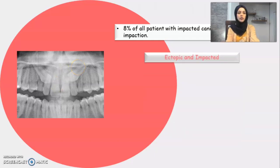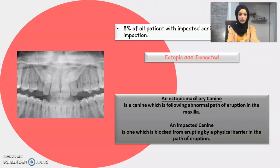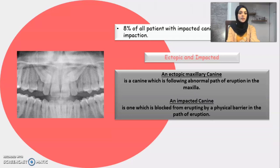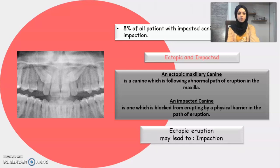An ectopic canine is one following an abnormal path of eruption in the maxilla, while an impacted canine is one blocked from erupting by a physical barrier. Ectopic eruption may lead to impaction.